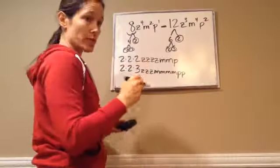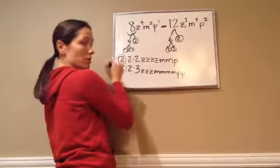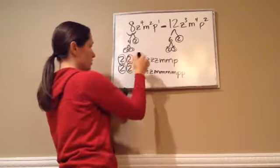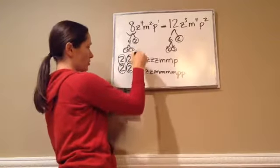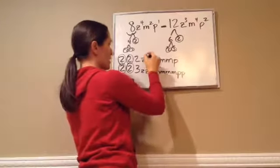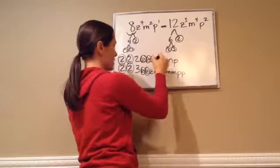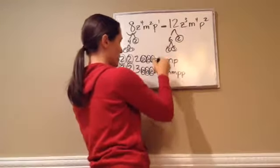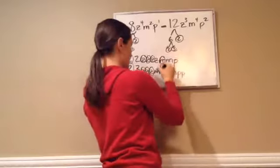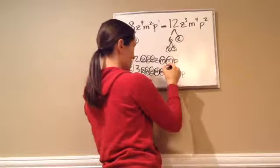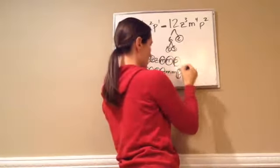Now, you're going to circle what's common. 2 and 2. 2 and 2. And then I can't circle any more 2's or 3's because there's not any. 1 z. 2 z's. 3 z's. But I can't do another z. m. m. One more. p. And p.